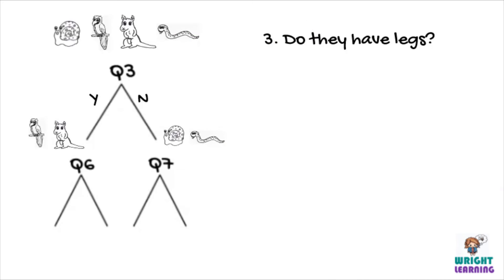And for our written dichotomous key, we would write under question 3, if yes, go to question 6, and if no, go to question 7.